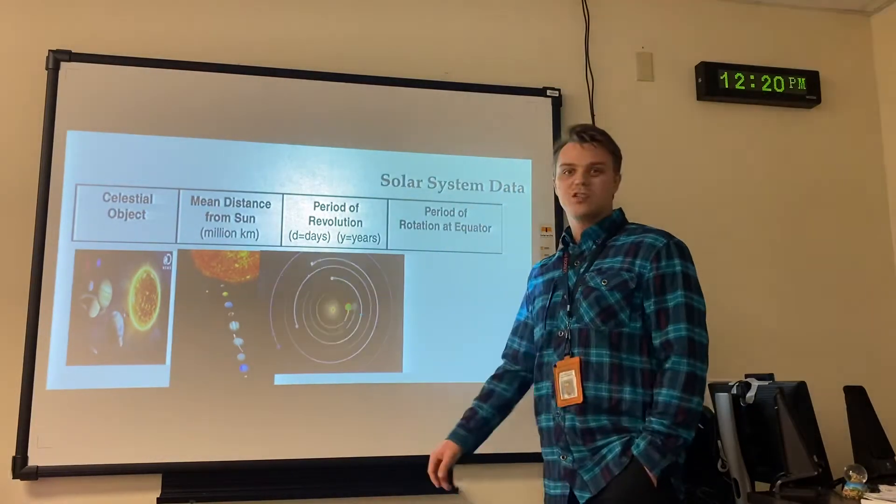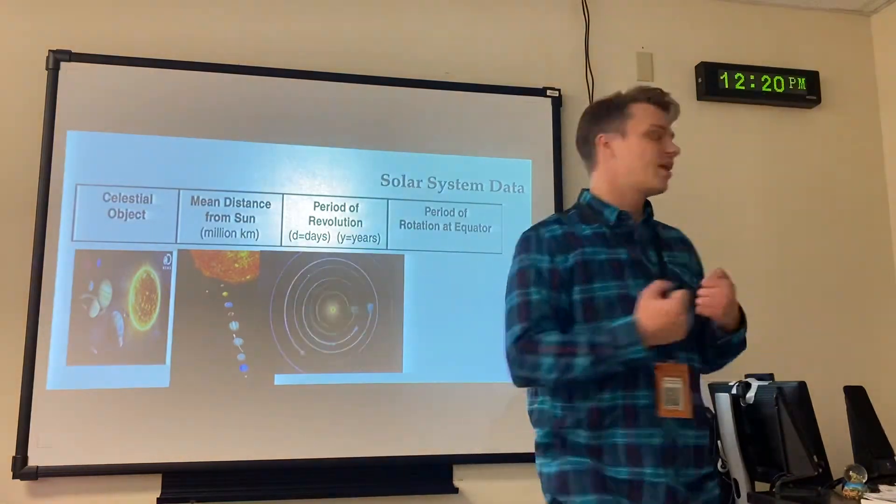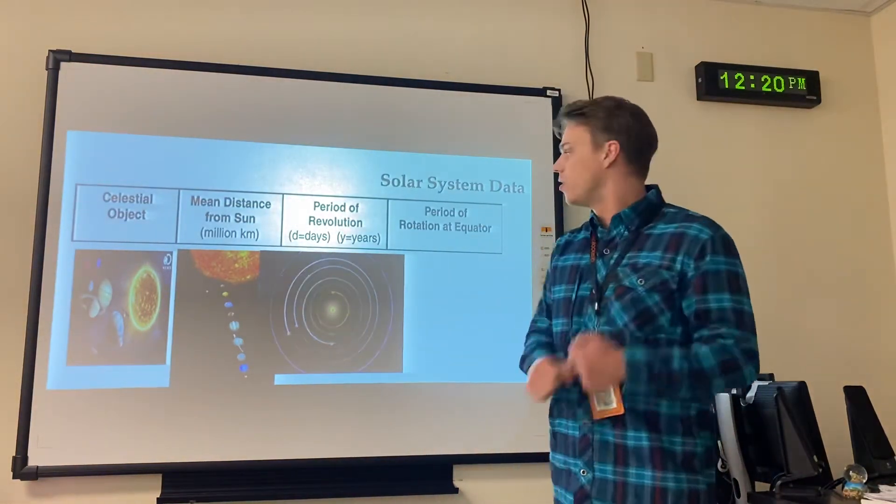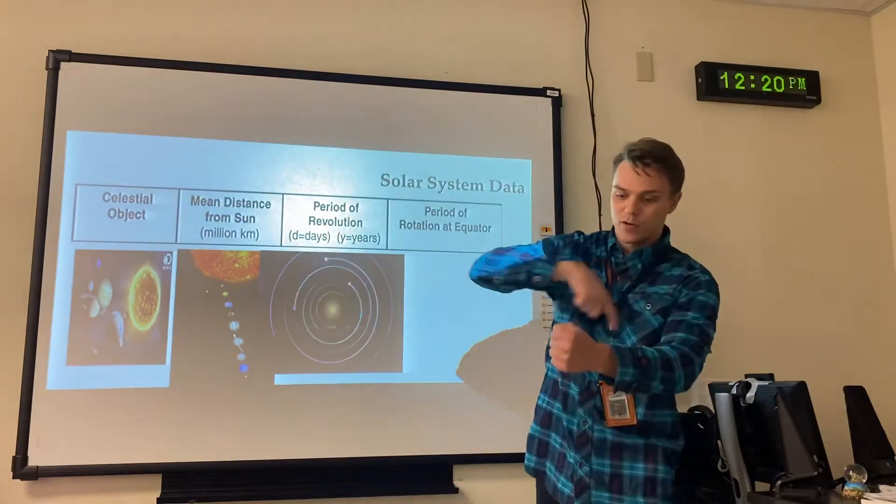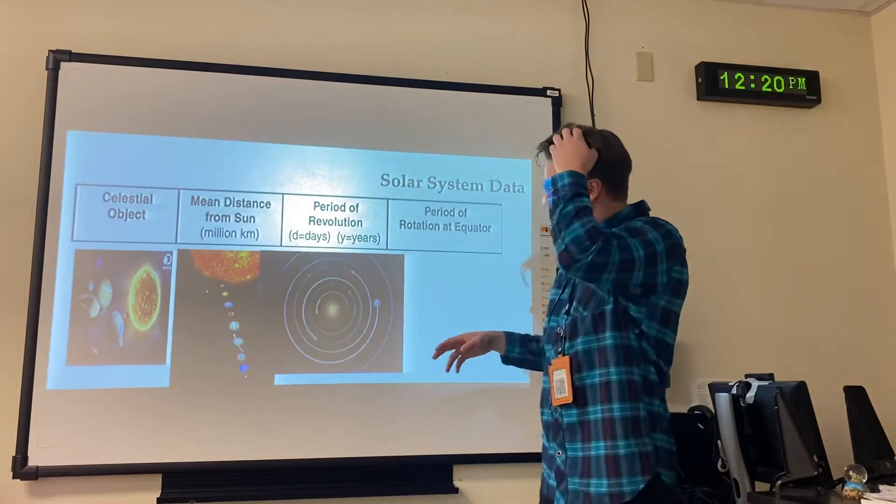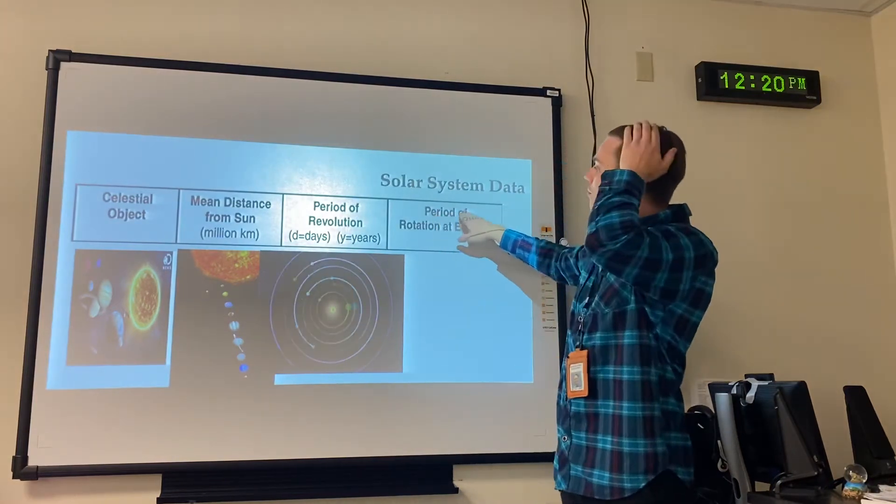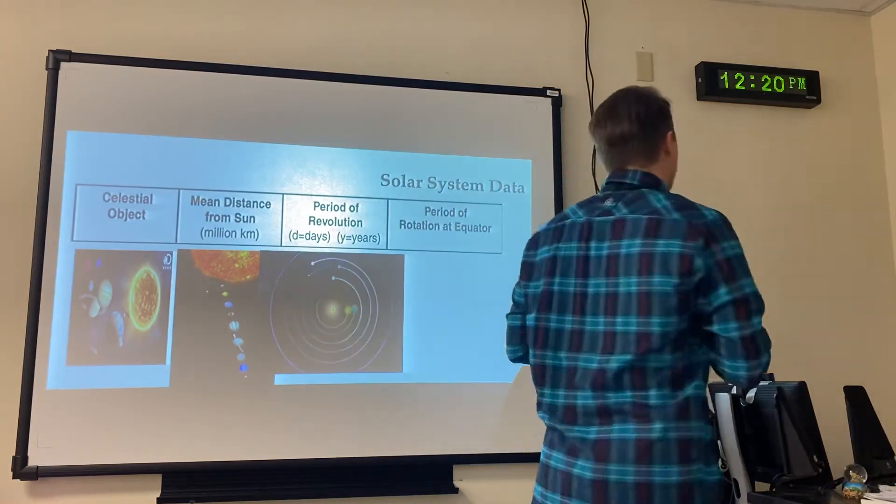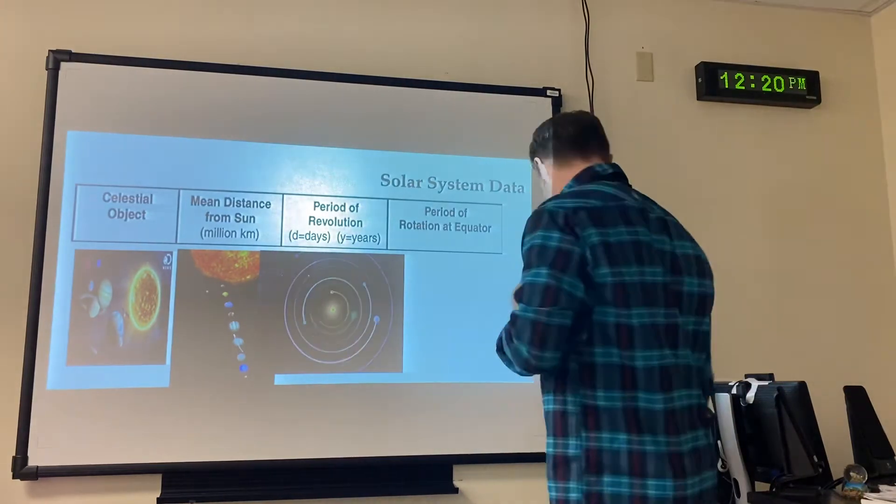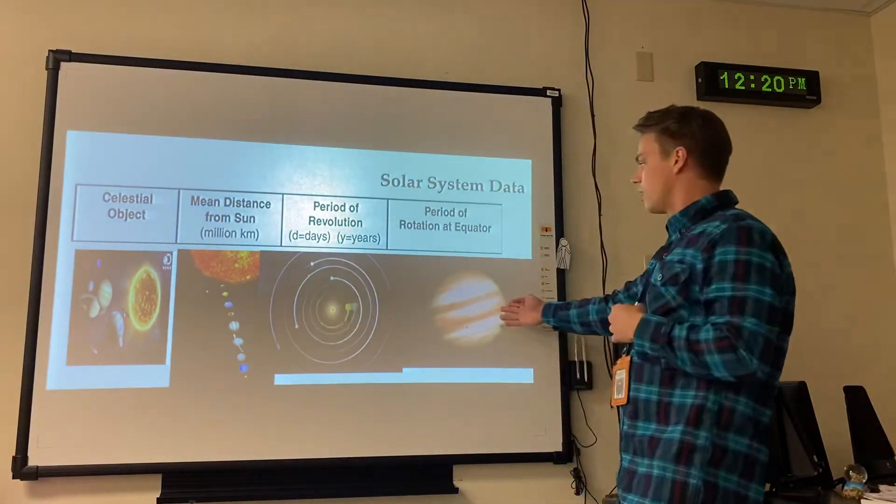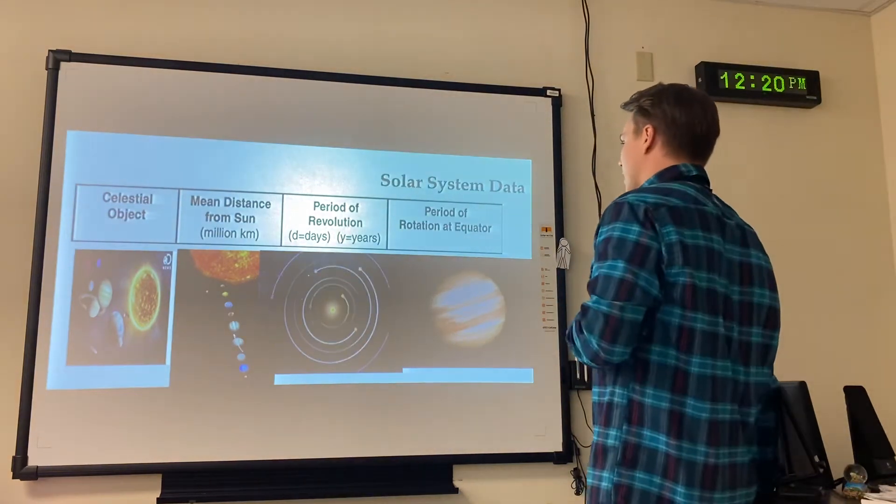And period of rotation is the same idea, but to spin on an axis, or a day. So a revolution has to do with the planet's entire orbit around the Sun, so its year. Earth's year is 365 days. And a period of rotation is how fast it takes to spin on its axis. For Earth, that's one day, or about 24 hours. Okay, so to spin on an axis. There's Jupiter spinning on its axis.